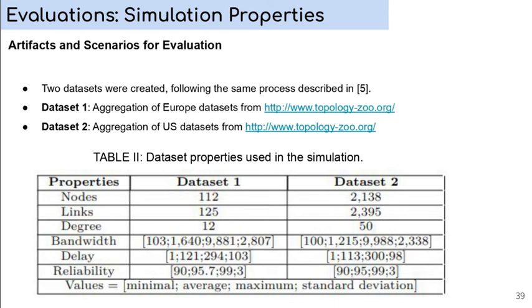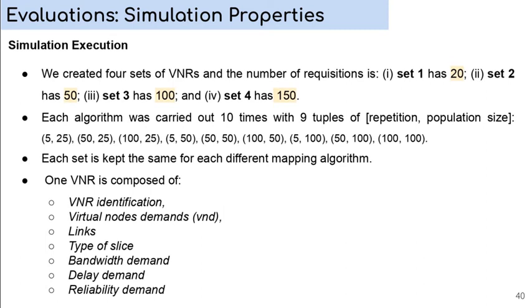About the simulation execution, we created four sets of VNR. And the number of requisitions is set 1 has 20, set 2 has 50, set 3 has 100, and set 4 has 150. Each algorithm was carried out 10 times with different tuples of repetition. Each tuple with a different number of repetition and population size. Each set is kept the same for each different mapping algorithm. And one VNR is composed of VNR identification, virtual nodes demand, links, type of slice, bandwidth demand, delay demand, and reliability demand.